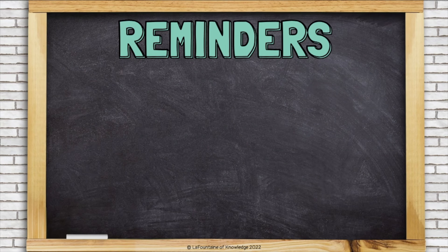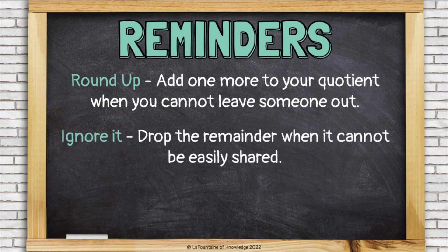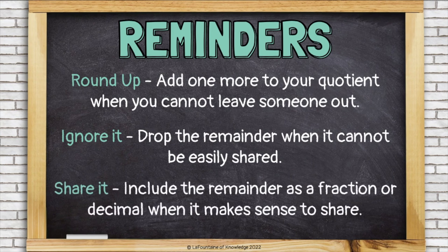Let's review our three options. When interpreting remainders in word problems, we can round up and add one more to our quotient — usually when we cannot leave someone or something out, like the eggs or the students going on the field trip. We can ignore it and drop the remainder when it cannot be easily shared, like that lollipop that needed to be split between 3 people. Or we can share it and include the remainder as a fraction or a decimal when it makes sense to share, like that leftover cookie — we can break it in half and give half to Shania and half to Elizabeth.